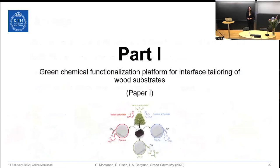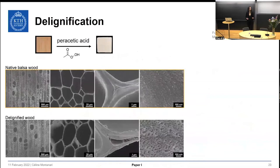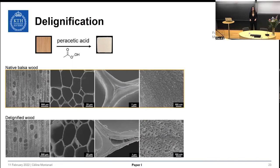I will now start by discussing a green chemical functionalization platform for wood substrates. The first part in preparing transparent wood is the delignification, performed in order to remove the lignin responsible for light absorption in wood. In this thesis, we used a mild and green peracid treatment to selectively remove the lignin. Scanning electron microscopy images of balsa wood cross-sections showed that after delignification, the wood microstructure was retained. We could also observe the generation of porosity in former lignin-rich regions.